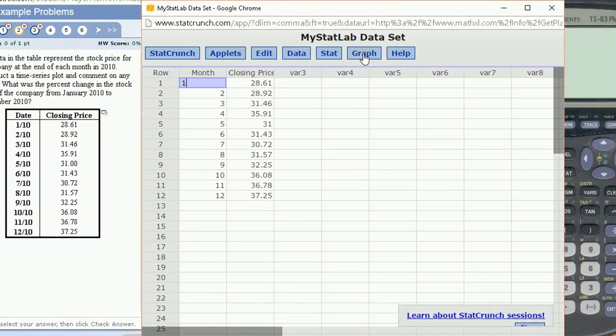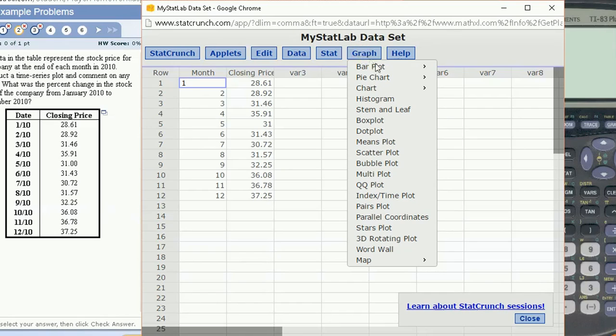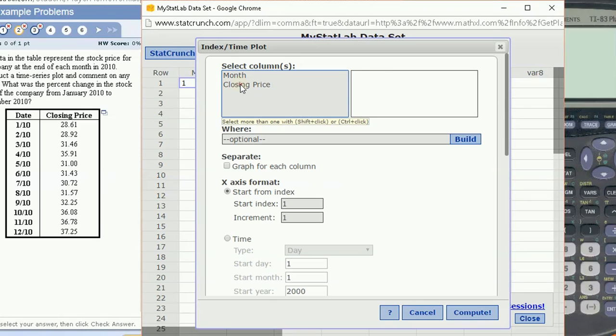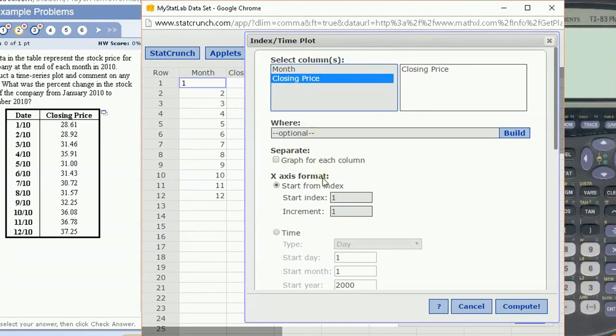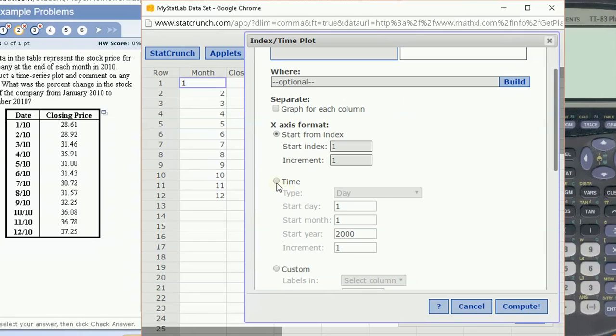So there's a nice tool for graphing a time series. What I'm going to do is choose under graph, this index slash time plot. I choose closing price to be my data that I want to graph. And I want to go down, I'm going to choose time to be my x-axis, and I'm going to choose it to go by month.